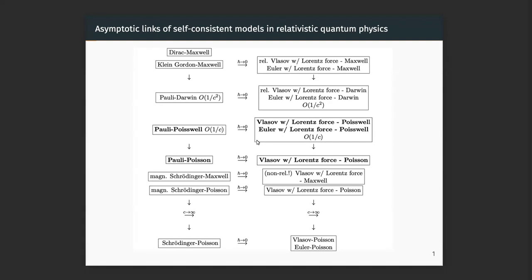On the top here you have the relativistic setting with the Dirac equation and the Klein-Gordon equation. The Dirac equation is for spin one-half particles, for fermions, and the Klein-Gordon equation is for bosons. In each case they are coupled to Maxwell's equations. Down here this row goes like the non-relativistic limit, where in the middle we have semi-relativistic regimes and on the bottom you have the non-relativistic limit, where the magnetic field disappears.